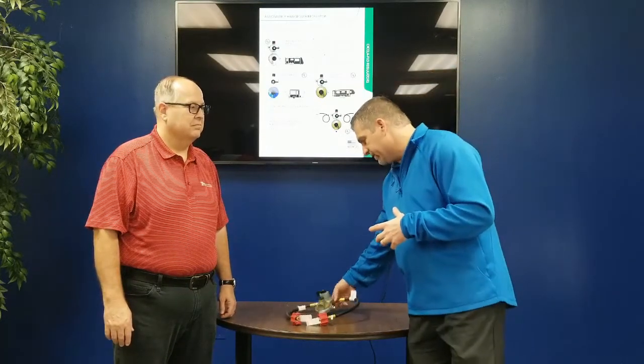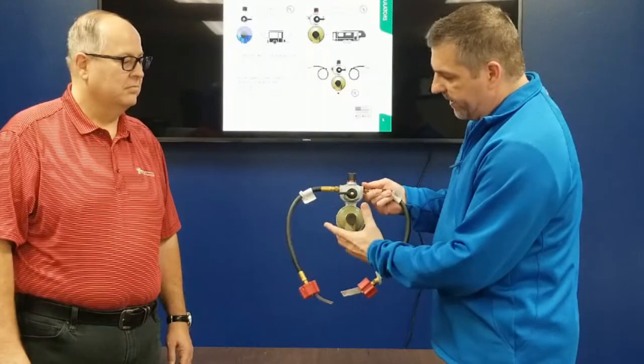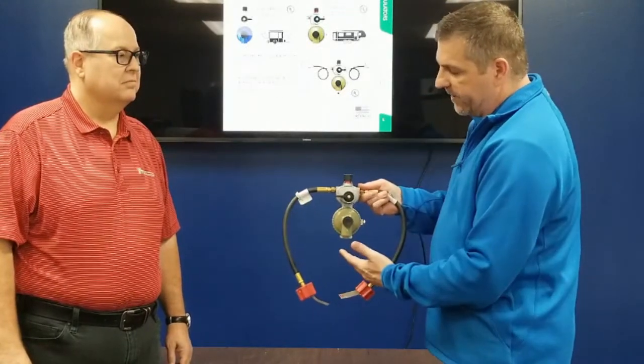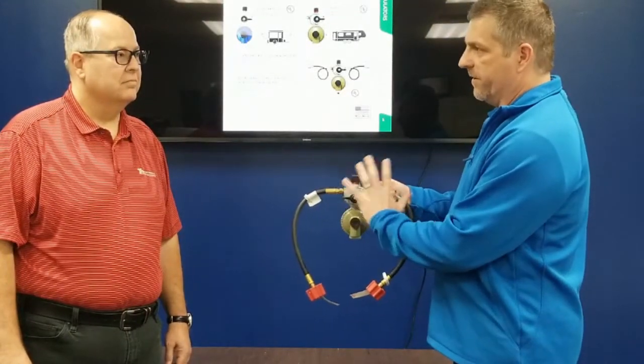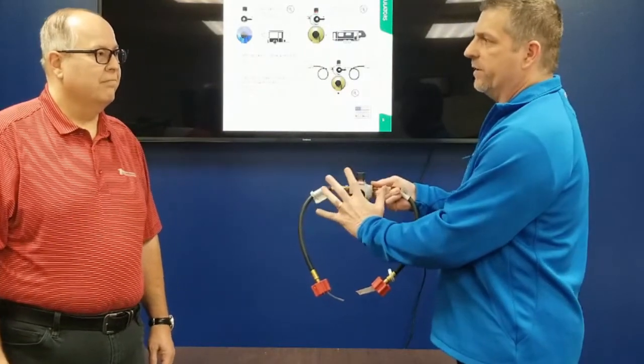So typically we would see this high-pressure regulator switchover with the pigtails. What would we typically see in an RV? Because this is not typical, but what would we typically see?